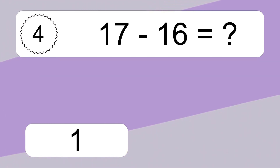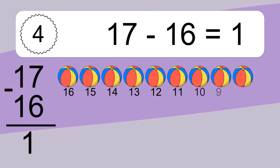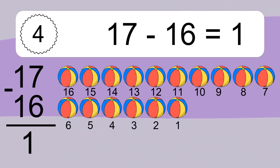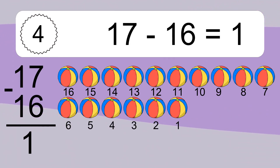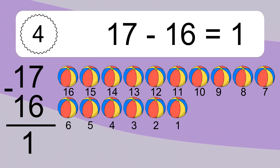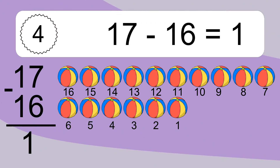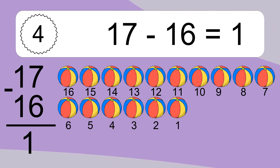17 minus 16 equals what? 17 minus 16 equals 1. Let's count it: 16, 15, 14, 13, 12, 11, 10, 9, 8, 7, 6, 5, 4, 3, 2, 1.